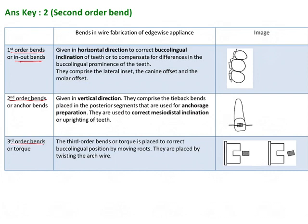First order bends are also known as in-out bends because they go from in to out, or from buccal to lingual. They are horizontal bends given to correct buccal-lingual discrepancy or compensate for the buccal-lingual prominence of teeth. For example, a lateral incisor gets a lateral inset, a canine gets a canine offset, and the molar gets a molar offset.